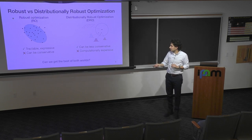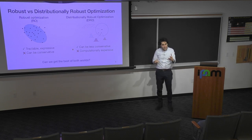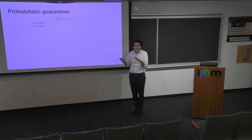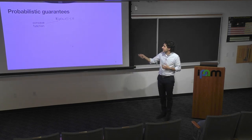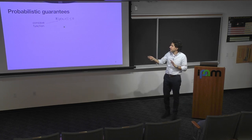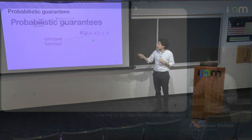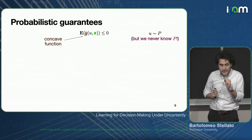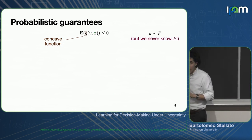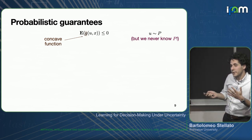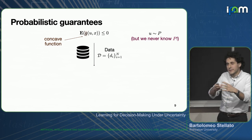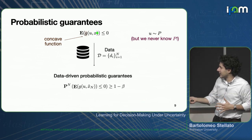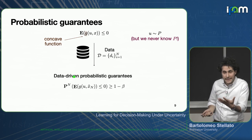Let me describe the probabilistic guarantees we want to ensure. For simplicity — though it can be extended to a maximum of concave functions — I have one concave function of u. We don't know the true probability distribution, and we want to ensure that the expectation of this quantity needs to be less than or equal to zero. We plug in data, and given n samples we want to build an optimization problem that gives a data-driven solution x-hat-n, which is itself a random variable.